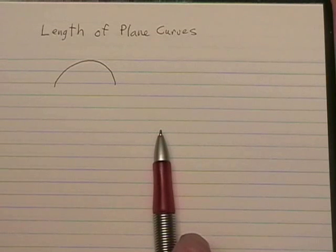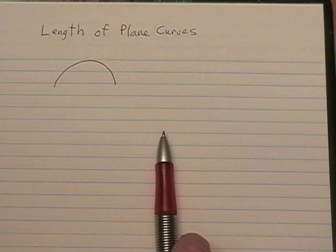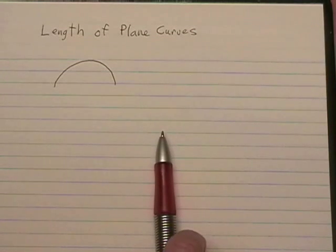And what we're going to do is use the formulas that we learned in lesson 5-3, length of plane curves, to show where this formula for the circumference of a circle came from.